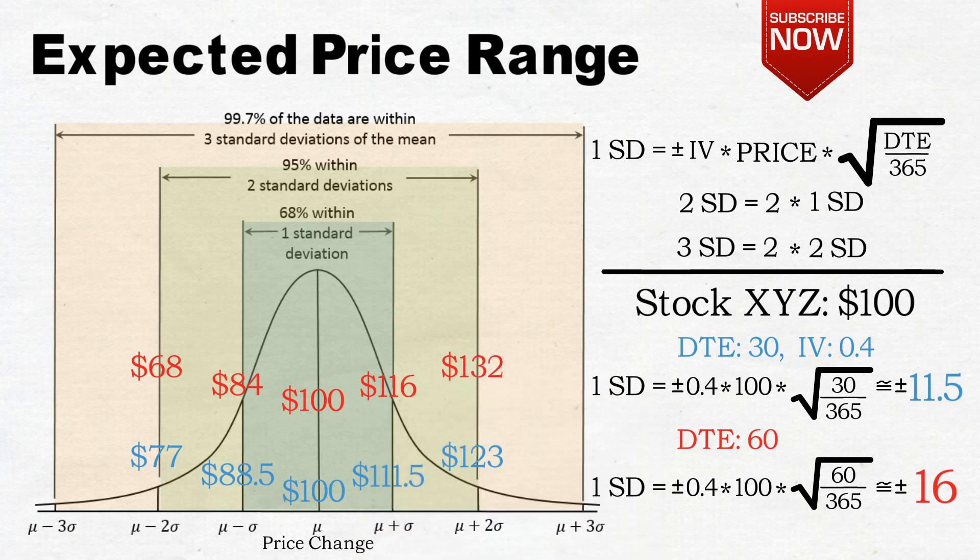This makes sense because XYZ can obviously move much more in 60 days than it can in 30 days.